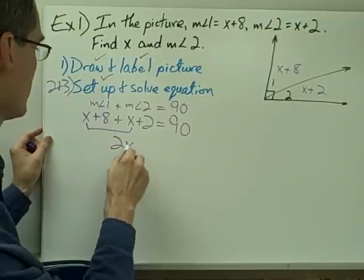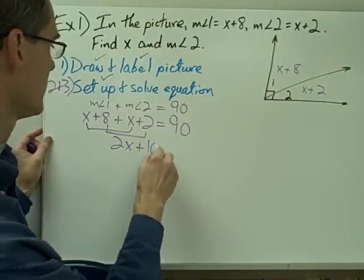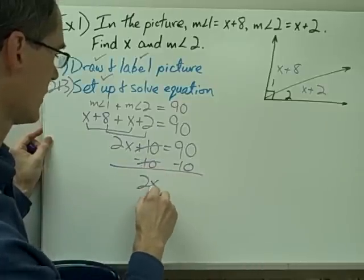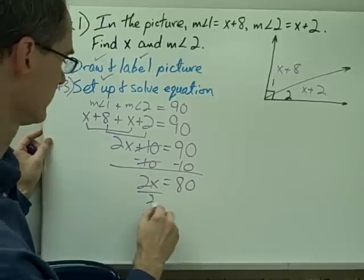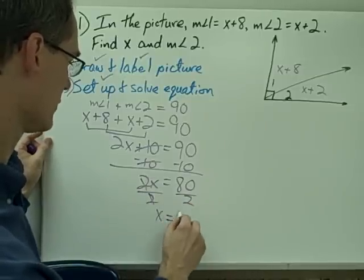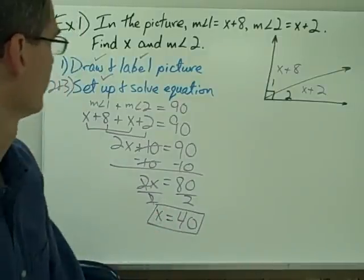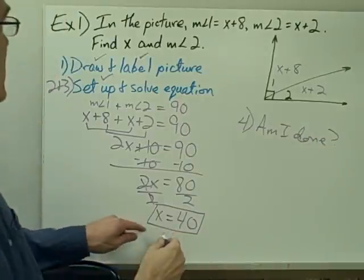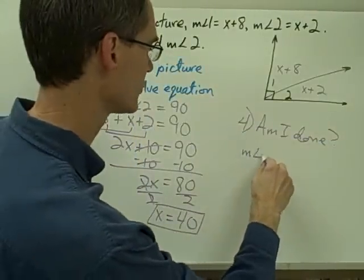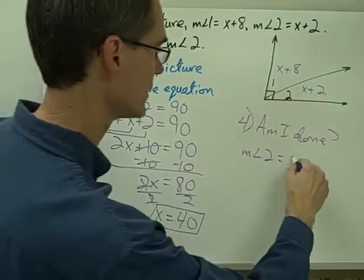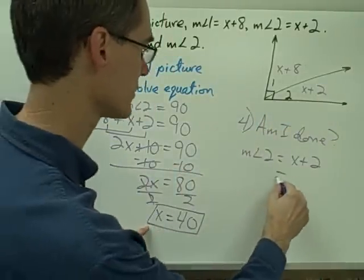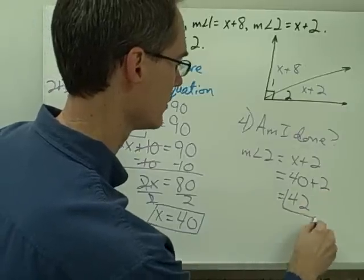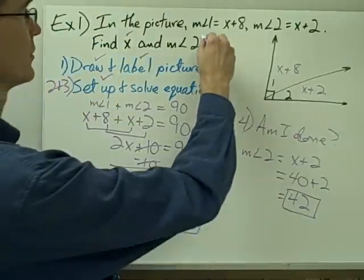Collecting like terms: 2x plus 10 equals 90. Subtract 10 from both sides, giving 2x equals 80. Divide both sides by 2 and x equals 40. Am I done? I still need the measure of angle 2. The measure of angle 2 is x plus 2, and substituting 40 in for x gives 40 plus 2, so the measure of angle 2 is 42. Now I'm done.